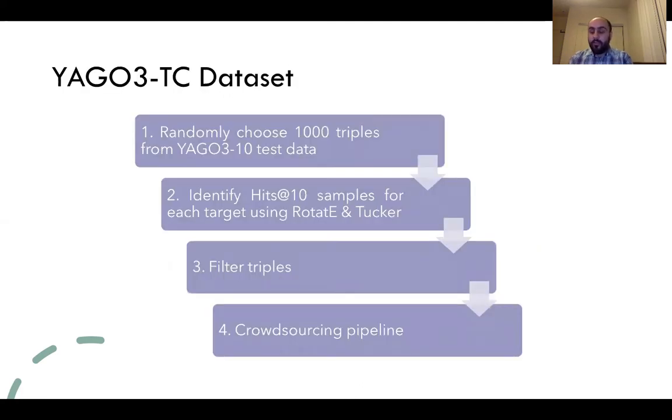To resolve these issues, we introduce a novel benchmark named Yago-TC by creating a semi-complete subgraph around test triples of Yago knowledge graph, checking the factuality of highest scoring triples through crowdsourcing.